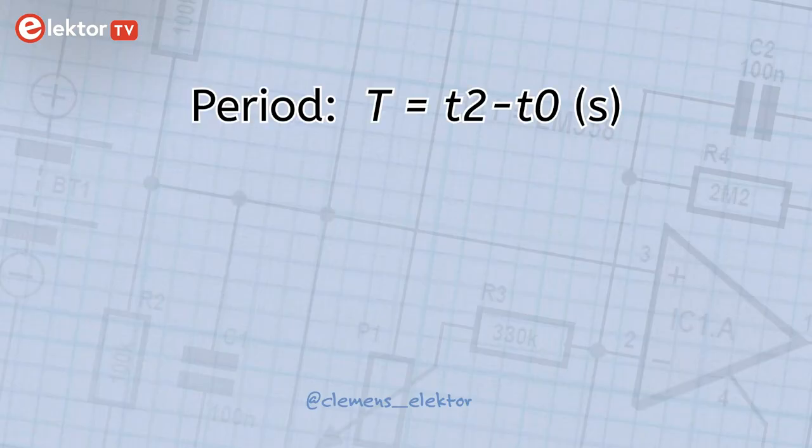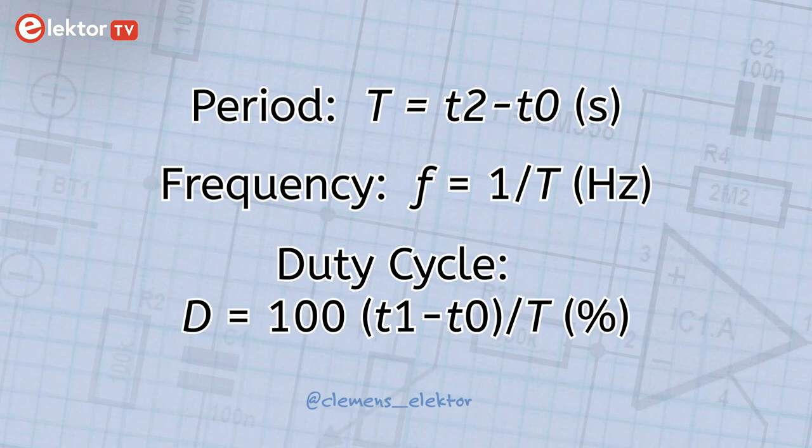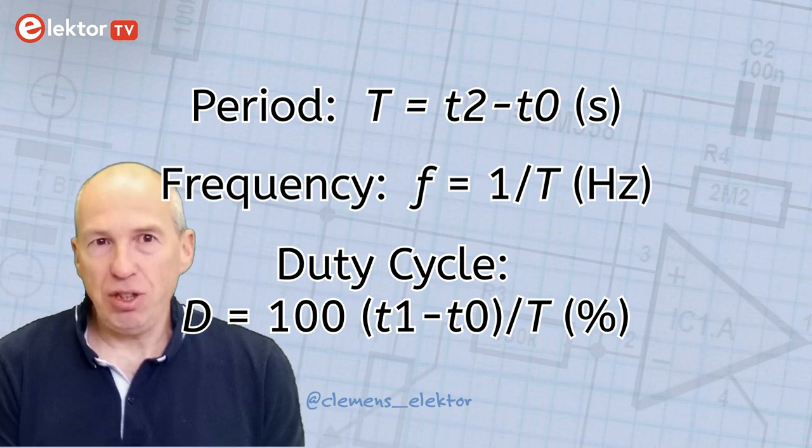The period t is t2 minus t0 in seconds. The frequency f is 1 over t in Hz. The duty cycle d is 100 times t1 minus t0 divided by t, the period. d is a percentage. From these values we can derive the positions of the potentiometers.